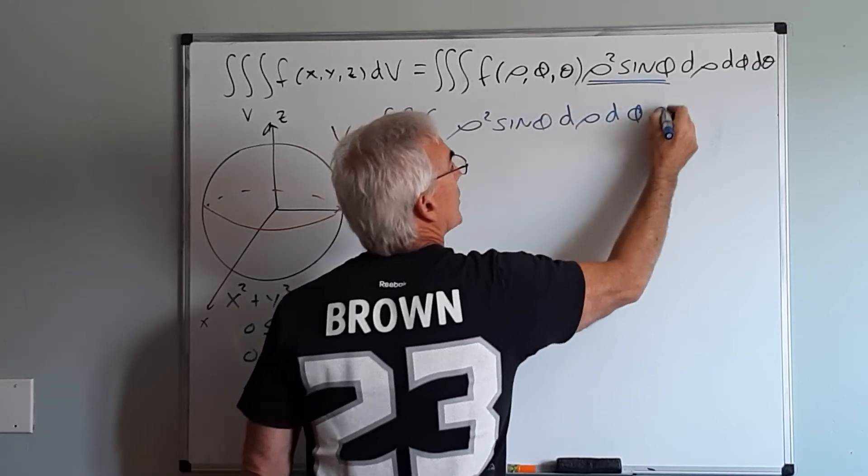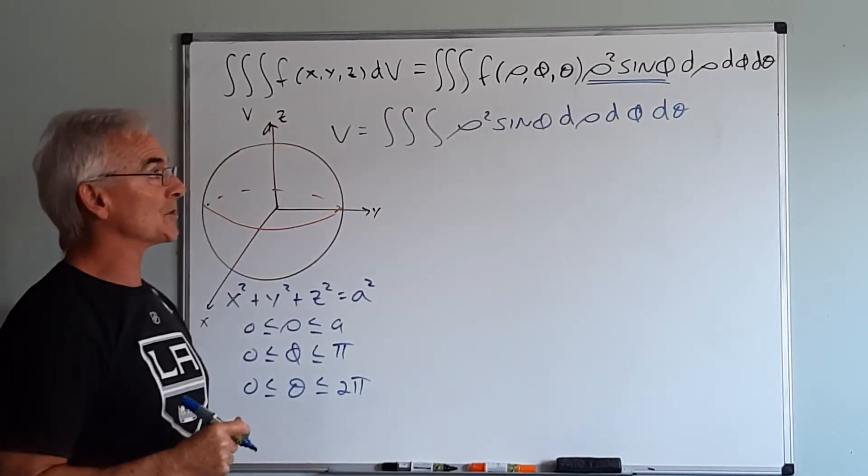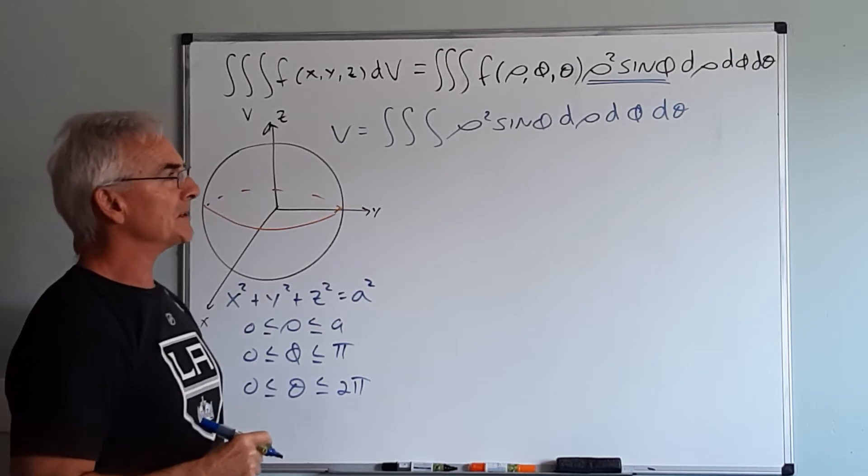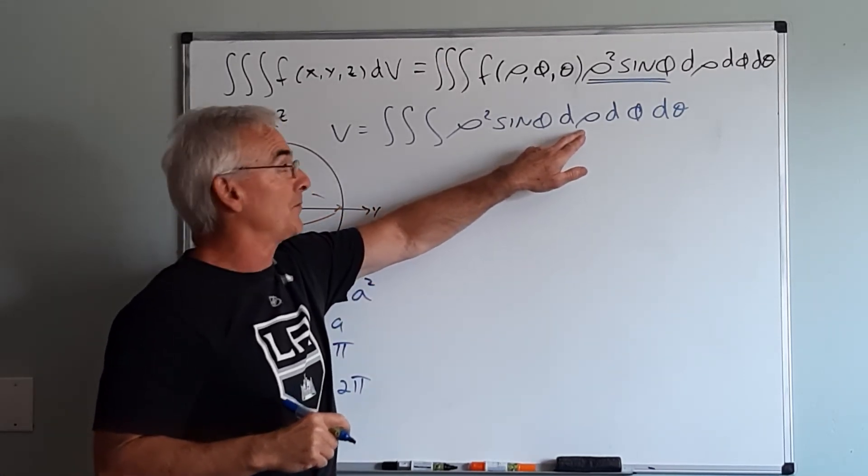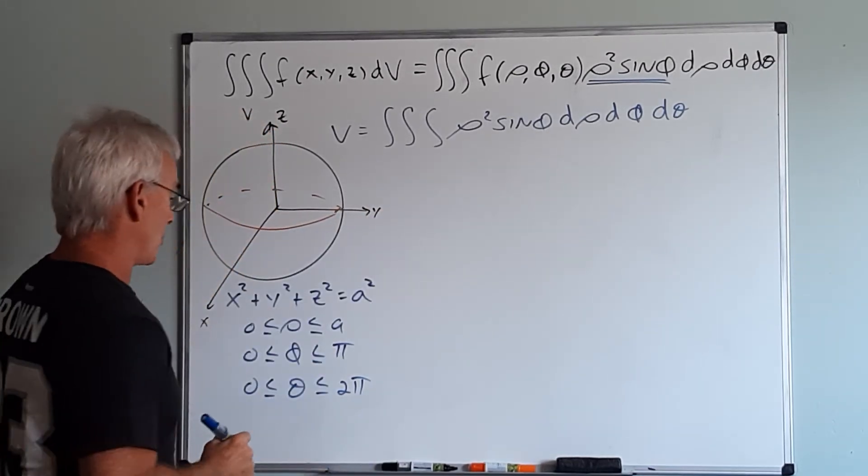Generally, we go in this order because theta is essentially always going to be constant, phi is mostly going to be constant, but rho might be constant, rho might be a function. So this order is the typical order we would go in.